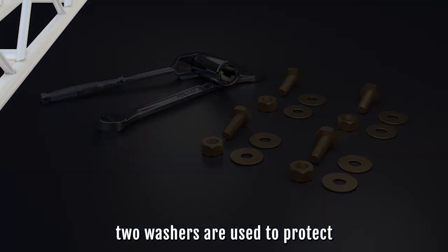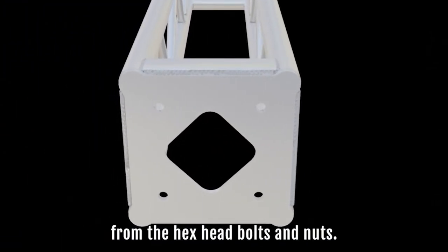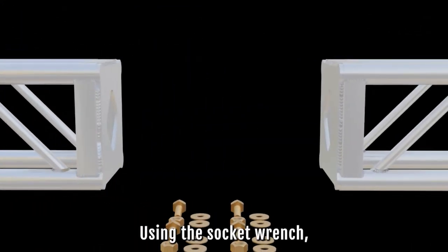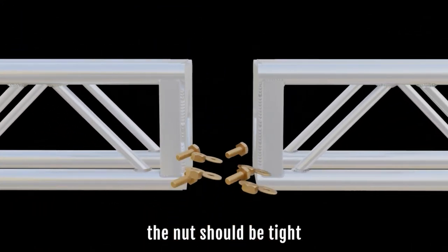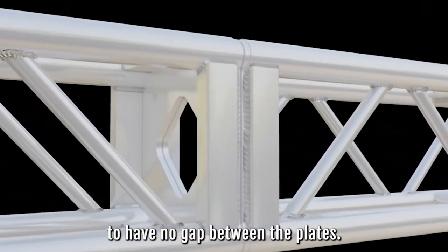Two washers are used to protect the aluminum plates from the hex head bolts and nuts. Using a socket wrench, the nuts should be tightened snug enough to have no gap between the plates.